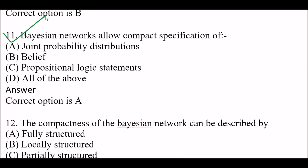Next question: Bayes networks allow compact specification of — Option A: Joint probability distributions, Option B: Belief, Option C: Propositional logic statement, Option D: All of the above. Right answer is Option A — Bayes networks allow compact specification of joint probability distributions.